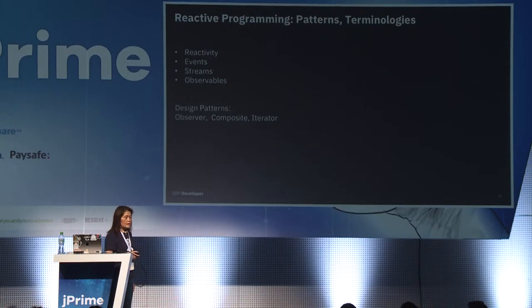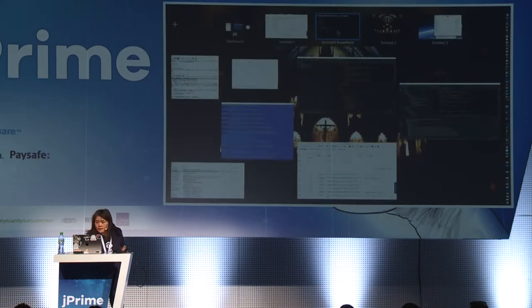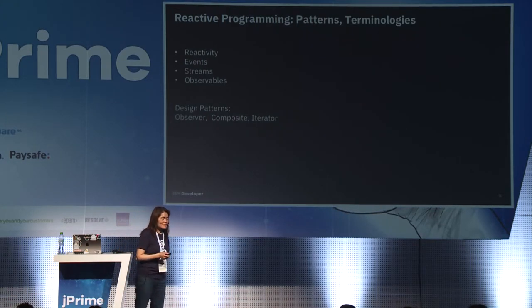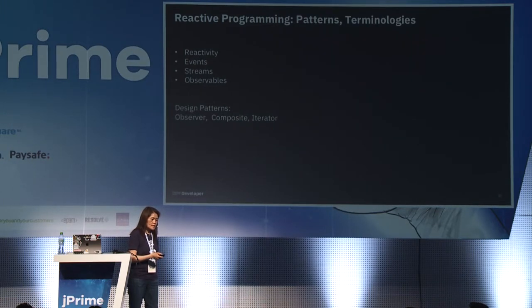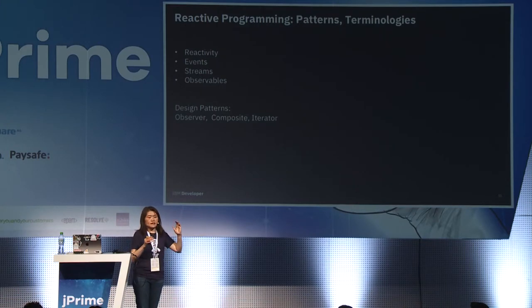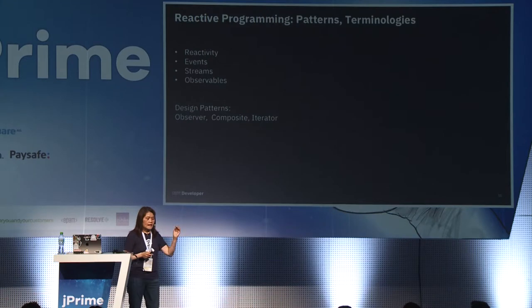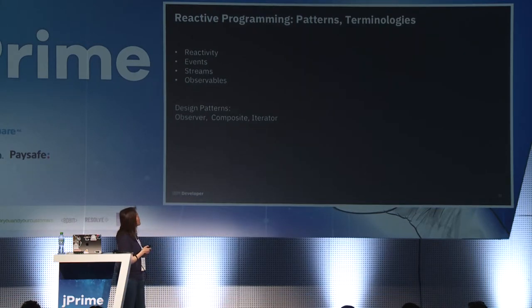Some reactive programming patterns and terminologies: events are the data that comes into your system that you need to process. Streams are primitives that have events happening on them. Observables are the events that happen — it's up to the observers to react to them. Design patterns used include the observer pattern, composite pattern, and iterator pattern.